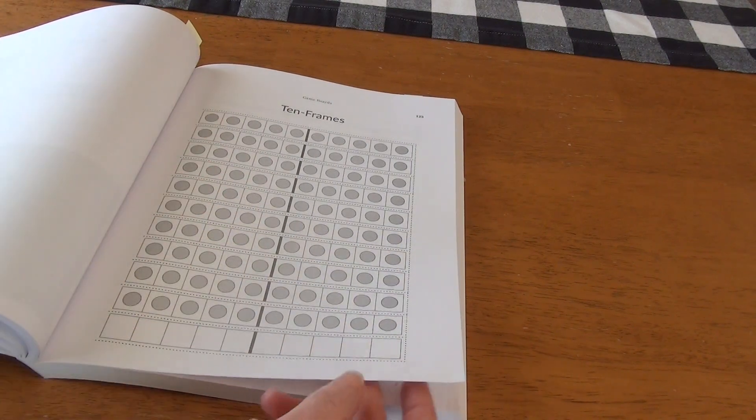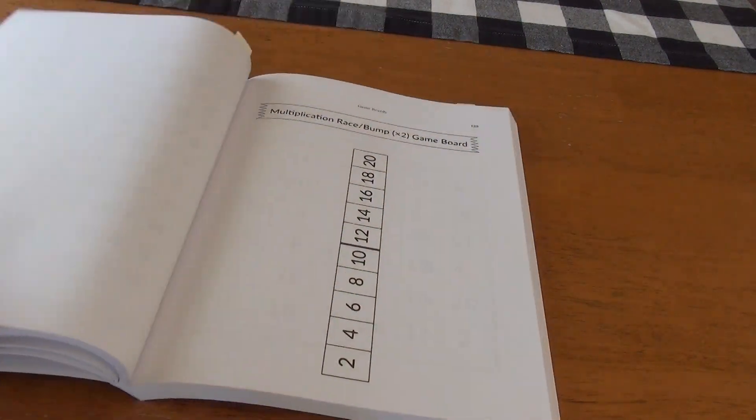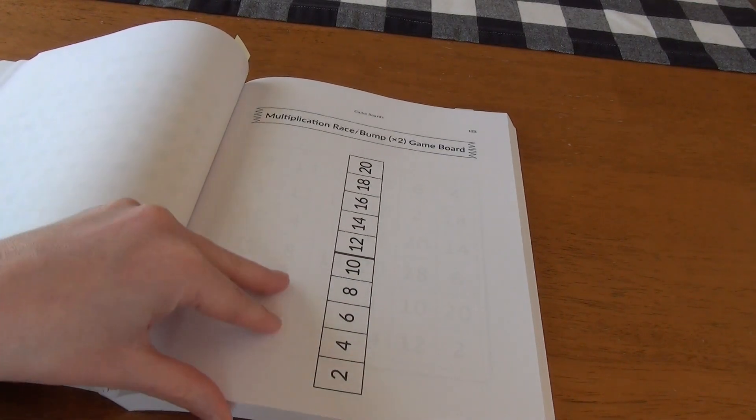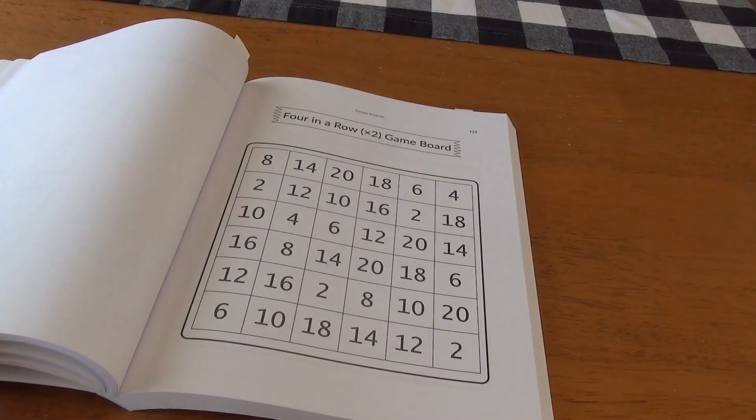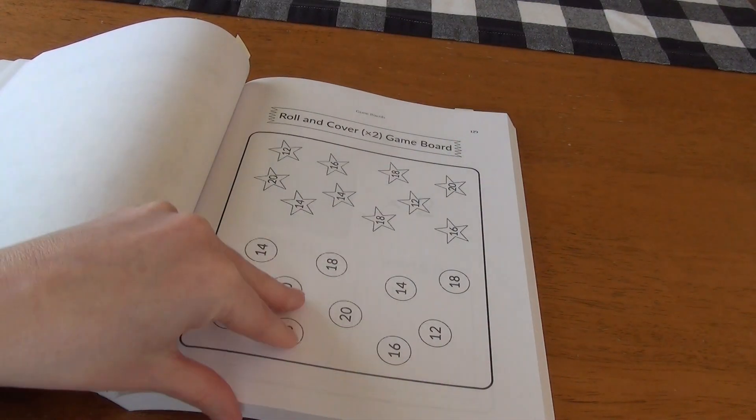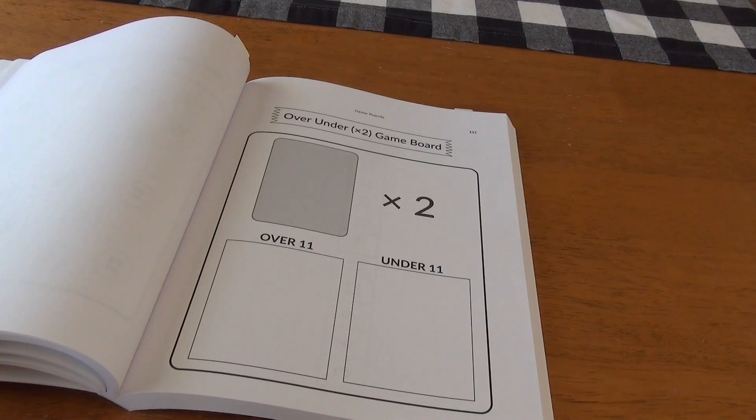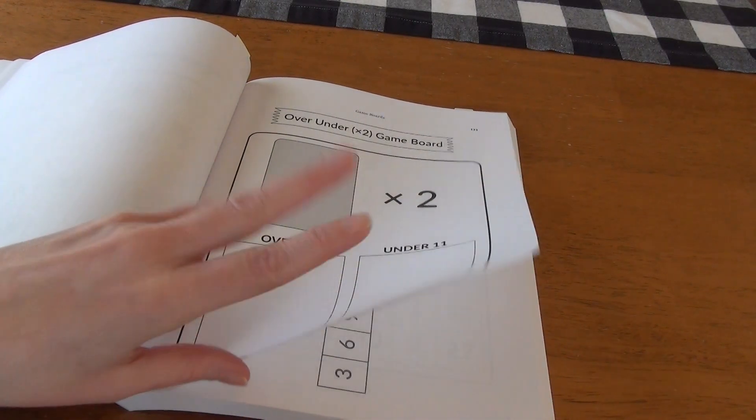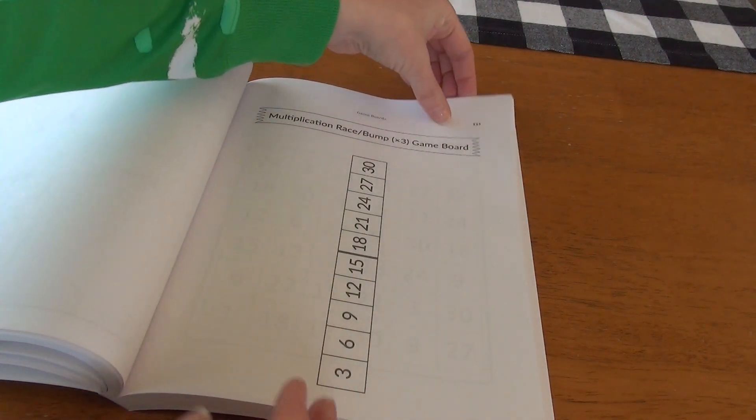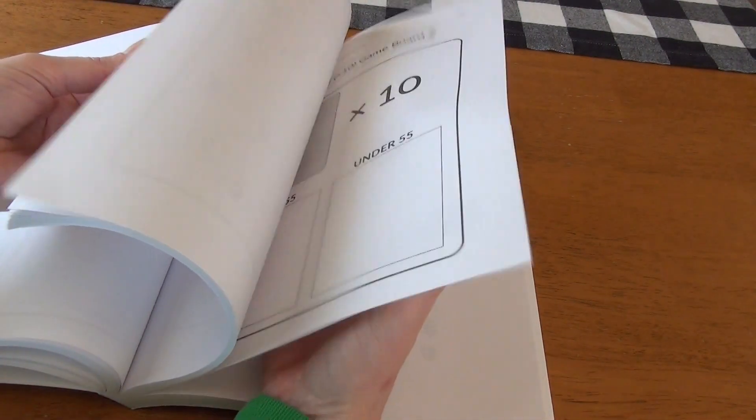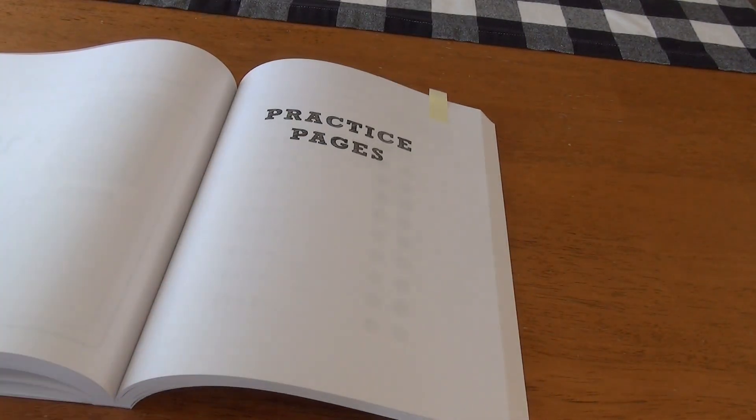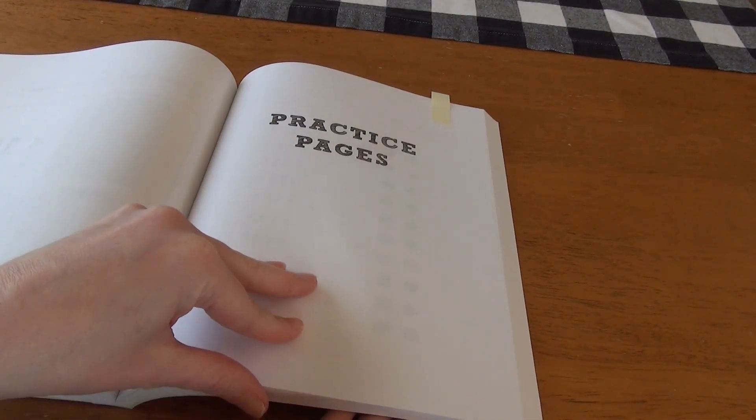10 frames are something that we see a lot in Singapore math. So this is something that is very familiar for us and will be an easy concept for us to grab. Here is the multiplication race bump board, the four in a row game board, the roll and cover game board, and then the over and under game board. It does give you instructions on how to play these games. And so all of this is all the week's worth of games that you have at your disposal.